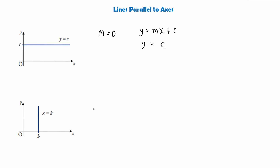For vertical lines, the gradient is undefined — we don't actually have a gradient. So the equation is simply x equals k, where k is whatever the x value of this line is, because the x value will always be the same while y is always changing.